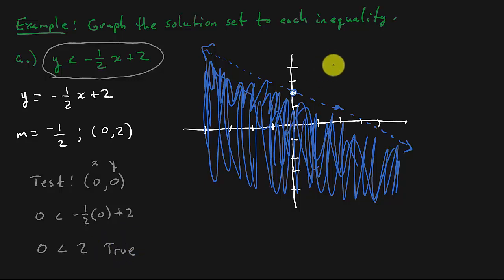If I had chosen the point and it came out false, I would shade on the other side. That's all you do: graph the equation you've already learned in college algebra, pick a test point anywhere not on the line, and see if it's true or false. If it's true, shade that side. If it's false, shade the other side. That's all there is to it.